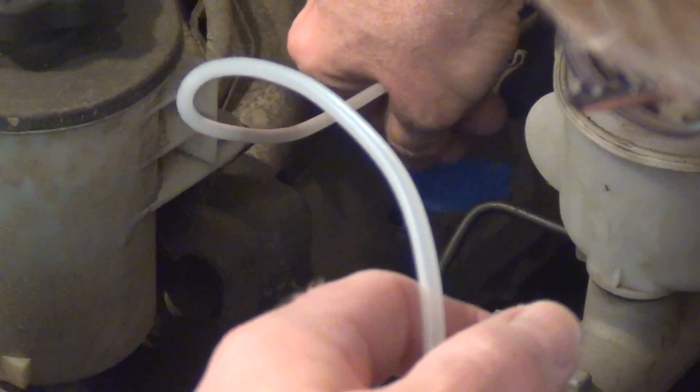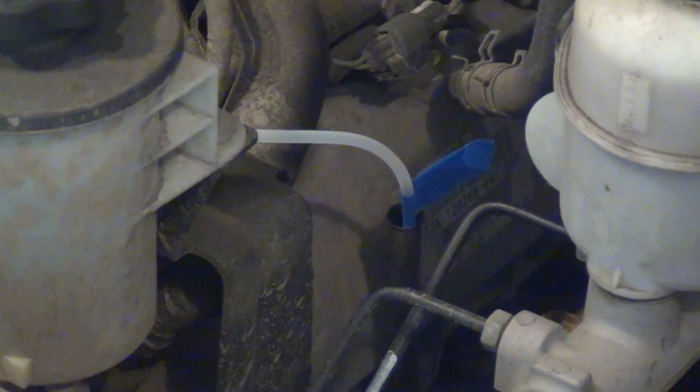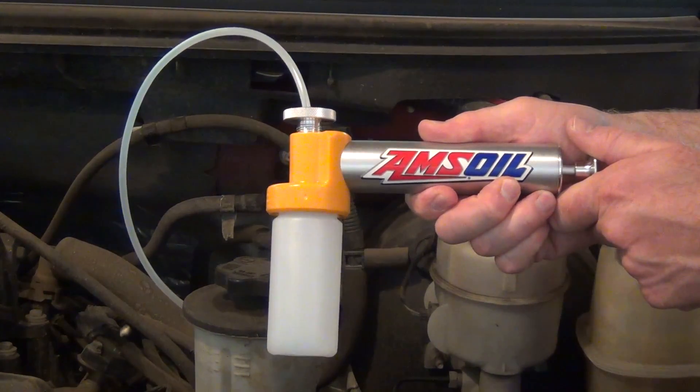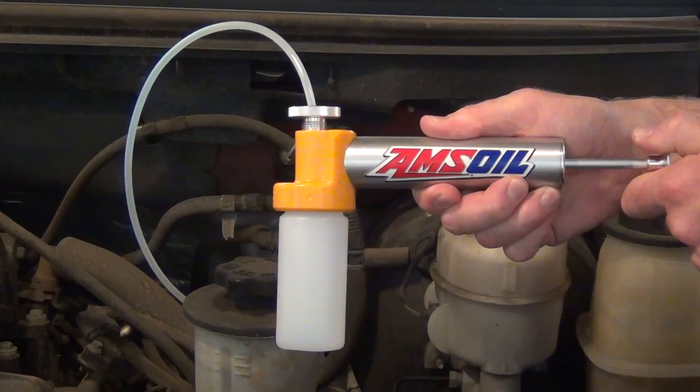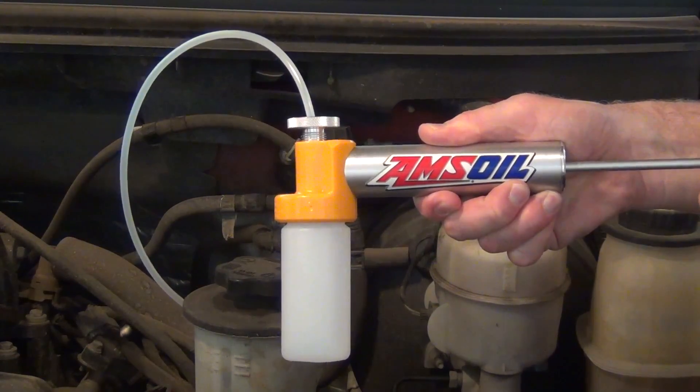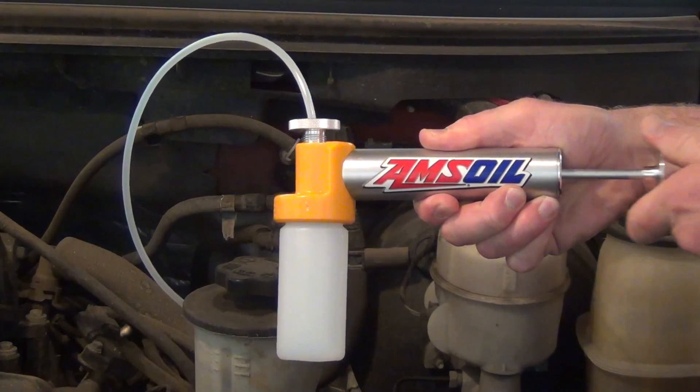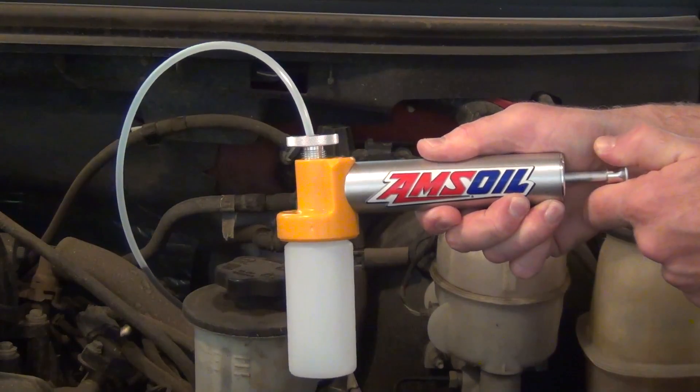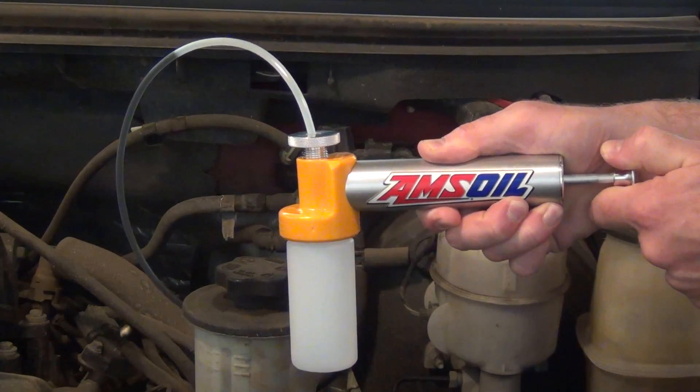Stick the tubing into the dipstick tube up to the tape mark. That locates the end of the tubing at the proper point in the oil pan. The pump will create a vacuum and pull oil up the tube. Here you can see oil coming up the tube and starting to fill the bottle.